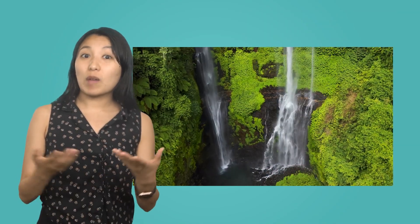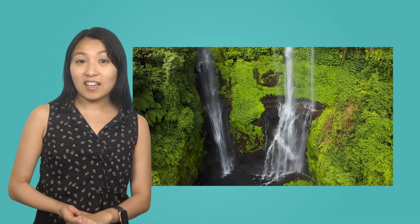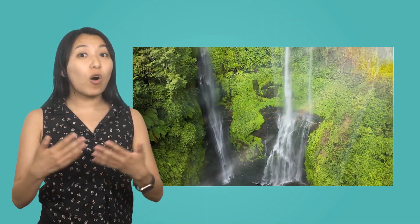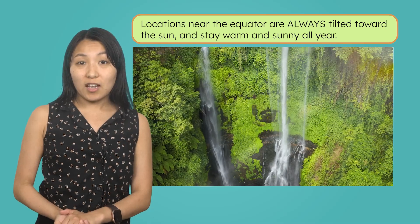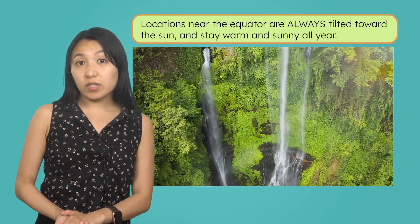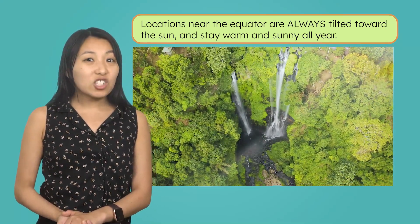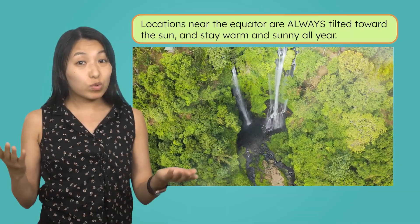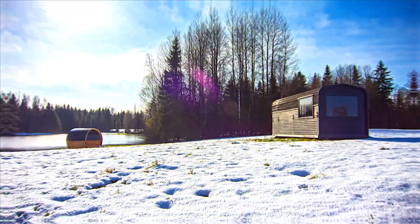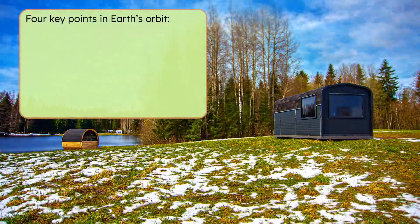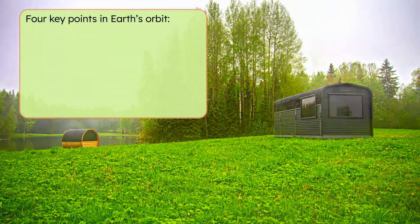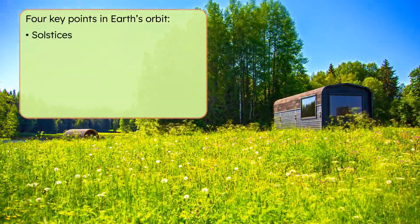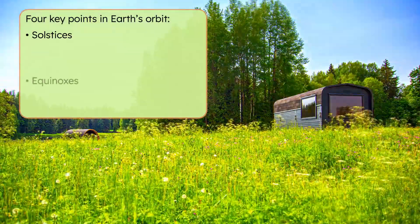As for places near the equator, like where tropical rainforests are located, it stays warm and sunny all year because they are always tilted toward the sun, meaning they always get a lot of sunlight. They don't get much change in temperature or daylight throughout the year. There are four key points in Earth's orbit that define when one season changes to the next: two are called solstices and two are called equinoxes.